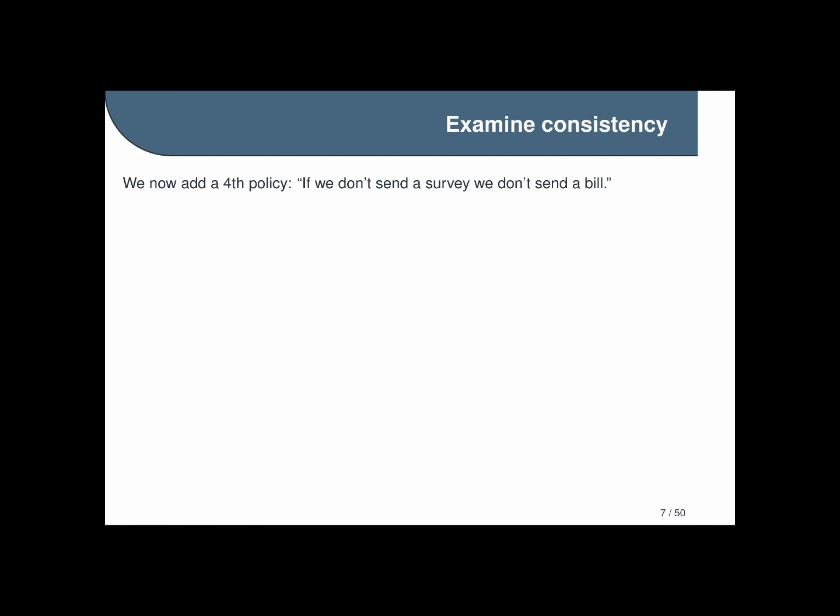So for example, say we were to notice the fact that we are sending bills all the time and never sending surveys and try to correct for it by adding this new policy that says if we don't send a survey we don't send a bill. If we do that what happens is we end up with a bigger problem. Our four facts become not bill implies advertisement, bill or advertisement implies not survey, not bill implies survey, and then also no survey implies no bill.